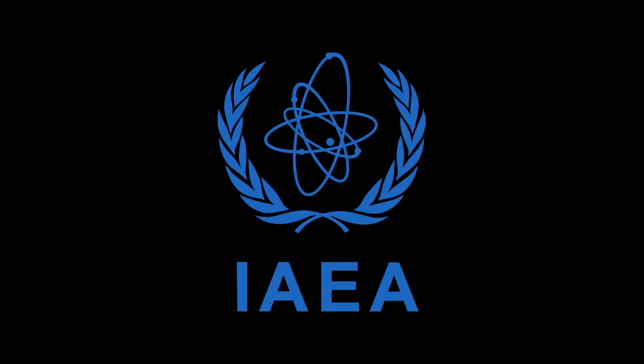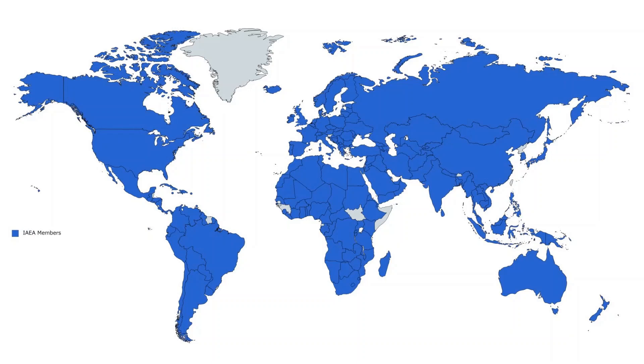Much like how the Nonproliferation Treaty is the central law in the nonproliferation regime, the IAEA is the central international organization within that regime. And also like the Nonproliferation Treaty, membership in the IAEA is very widespread — almost this entire map is blue. That's because there are a lot of benefits to being a member of the IAEA and very few downsides. As a consequence, the exceptions on this map are few and far between.